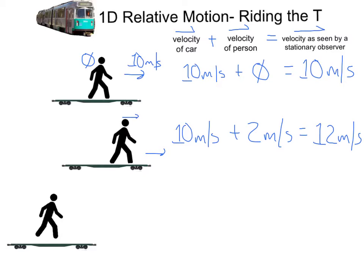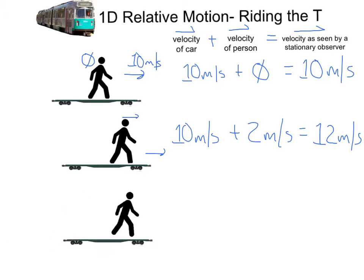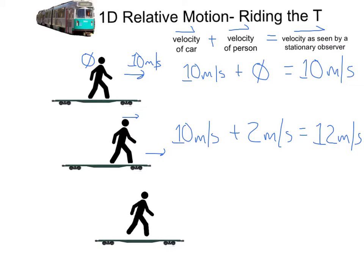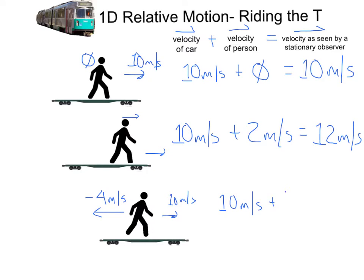What if you got to the front of the car and realized that was not your stop? You then started to turn and walk the other way at a different speed. The car is moving this way at 10 meters per second, and you turn and walk back more quickly to get your seat back at 4 meters per second in the opposite direction — let's call it negative 4 since it's in the opposite direction. The car would be moving at 10 meters per second, and you would be walking backwards at negative 4 meters per second, so somebody would see you walking at 6 meters per second relative to them on the sidewalk.